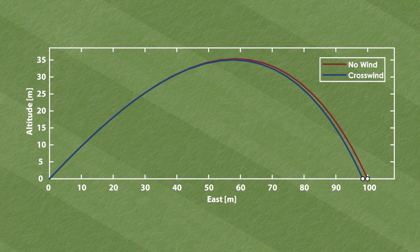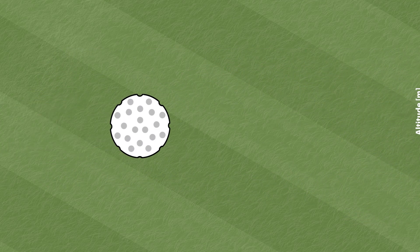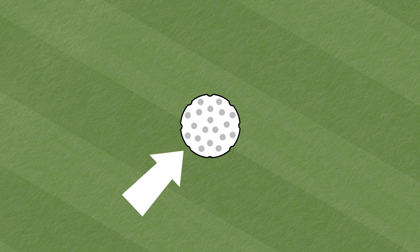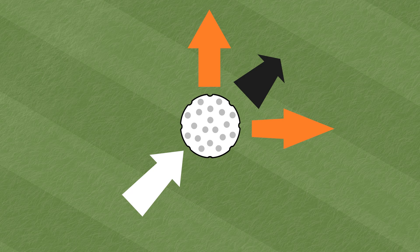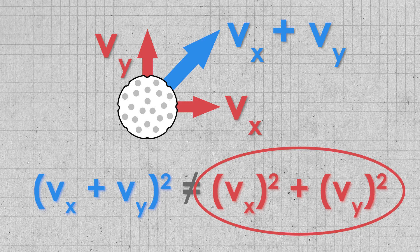This also explains why crosswind affects the distance traveled down the fairway. This wind increases the total velocity of the ball through the air, increasing drag in all three dimensions, even the ones perpendicular to the original wind. The students that got this problem wrong were using the component method without realizing this was an issue.